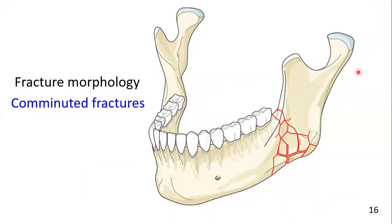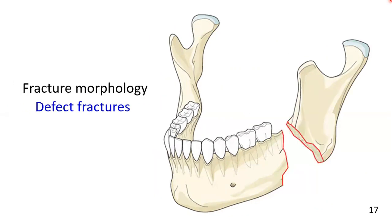Comminuted fractures involve multiple fracture lines in the same anatomic location, resulting in numerous fragments of bone. The bone is often shattered in the fracture area, with fracture lines running in three dimensions. Many clinicians consider comminuted fractures synonymous with multi-fragmentary fractures. Defect fractures are characterized by a loss of bone at the fracture site.